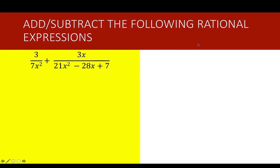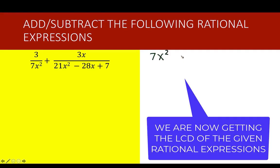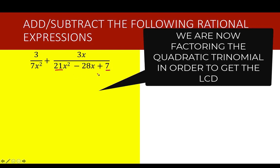The next example with the red banner is a little more challenging. We have 3 over 7x squared plus 3x over 21x squared minus 28x plus 7. The denominators are different — one is a monomial and the other is a quadratic trinomial — so we need to find the LCD. For the trinomial, multiply the leading coefficient 21 by the constant 7 to get 147, and find two factors that multiply to 147 and sum to negative 28: those are negative 21 and negative 7.